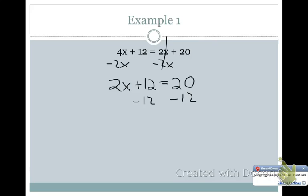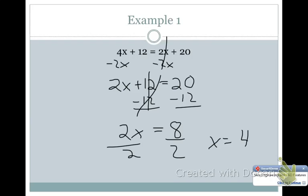So now I'm going to subtract 12, because we should always add or subtract before we multiply or divide. That's going to cancel those. 20 minus 12 is 8. I'm going to bring down my 2x, divide both sides by 2. x will equal 4.